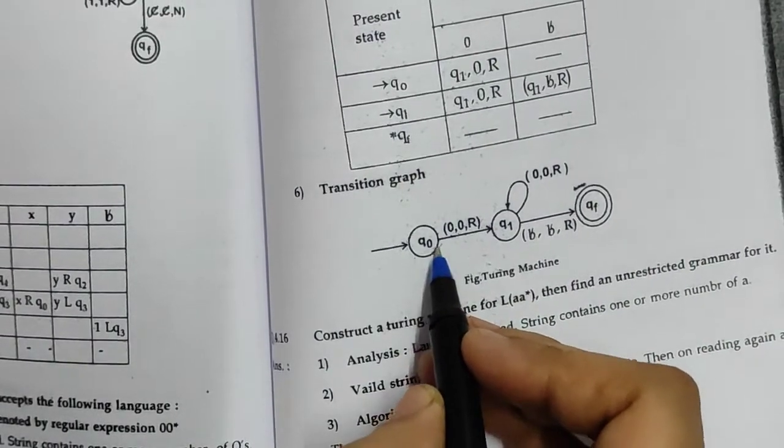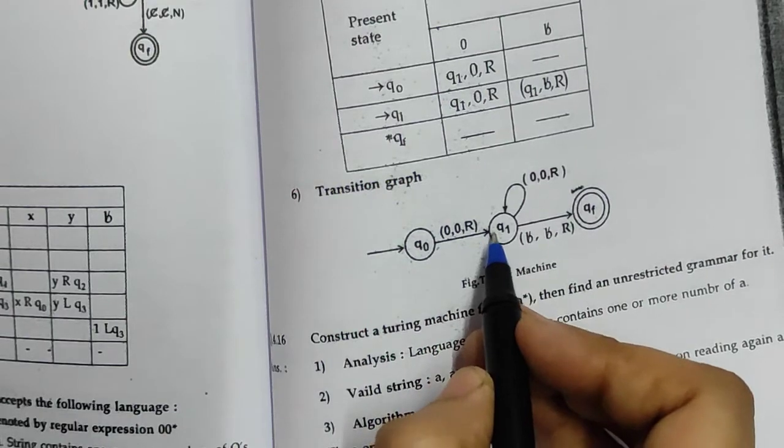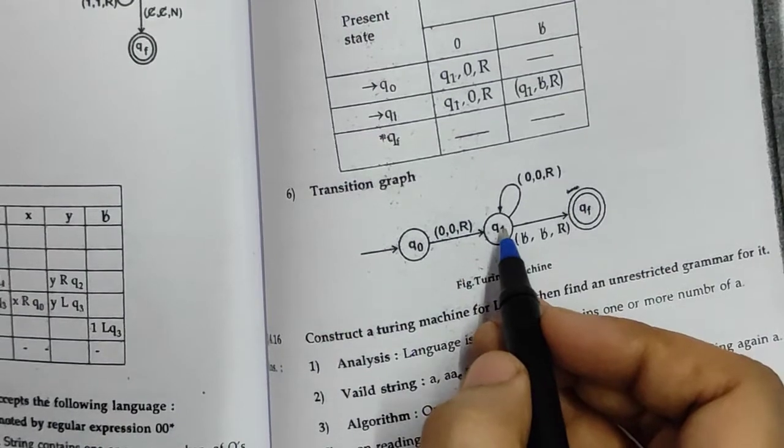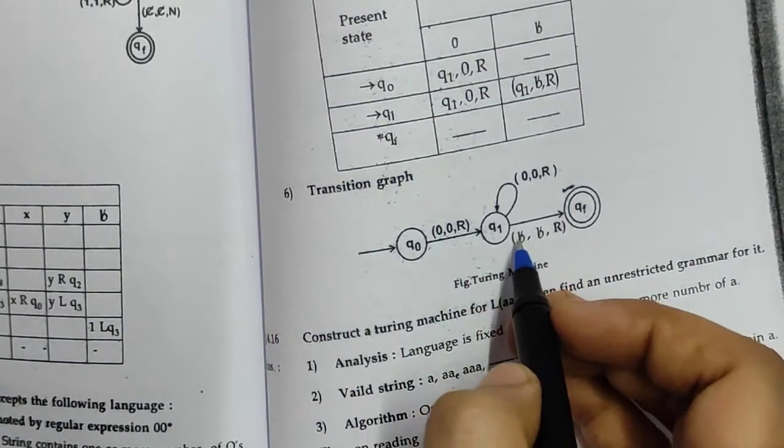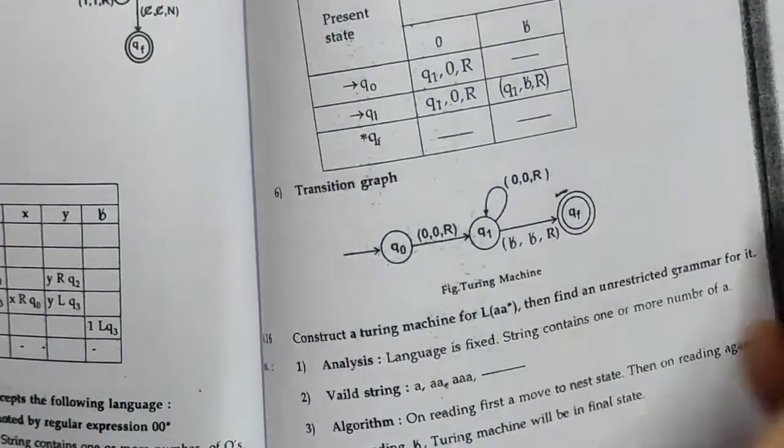Here q0 is the initial state. If we are getting a 0, we will keep it as it is and move in the right direction. Then if we are getting more 0s, we will keep those 0s as it is and move in the right direction. At the end, if we are getting a blank symbol, we will keep that blank as it is and move in the right direction, and that string will be accepted.